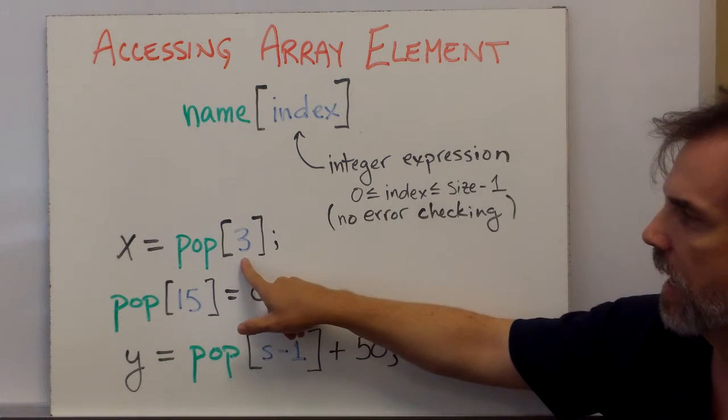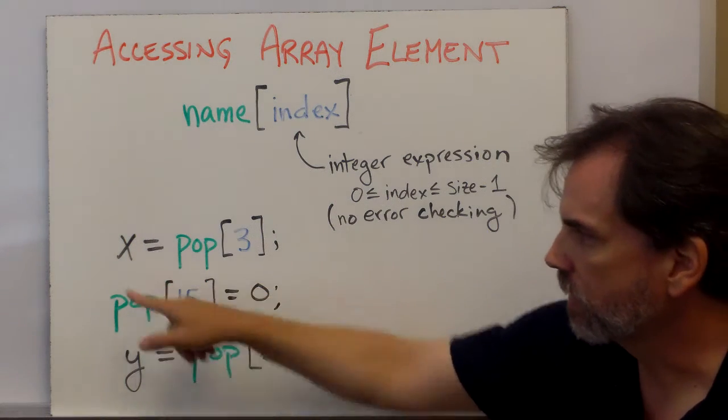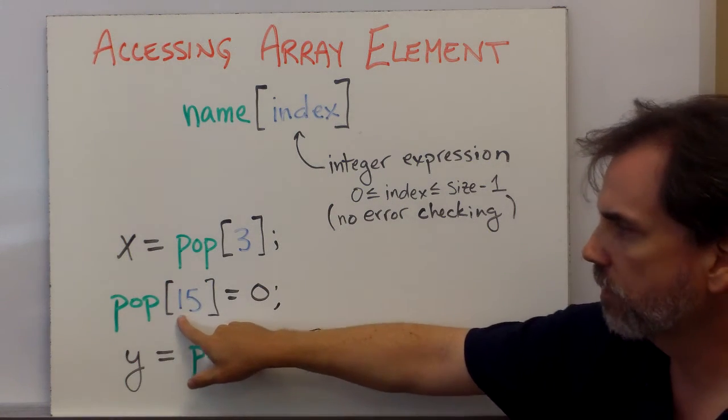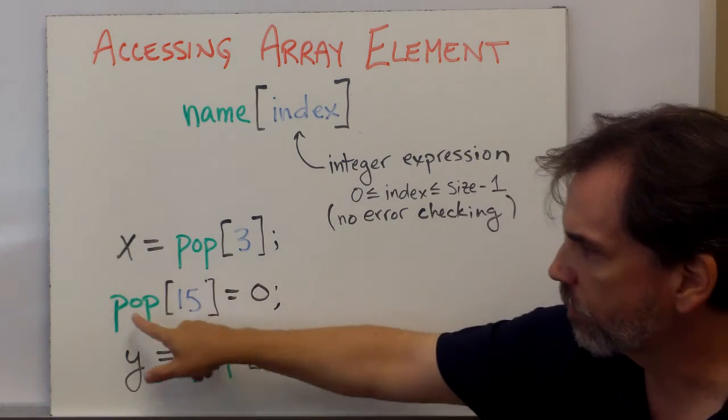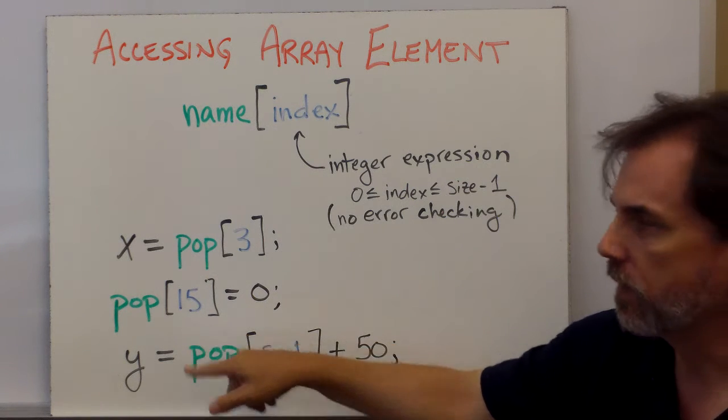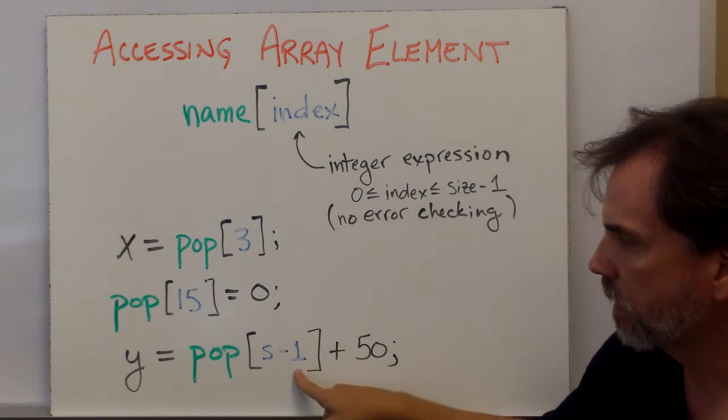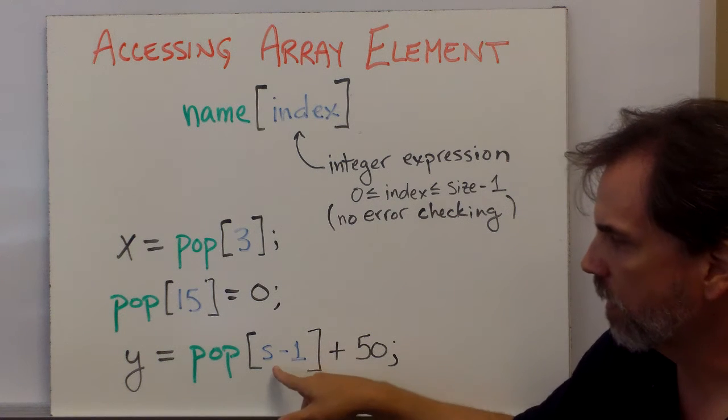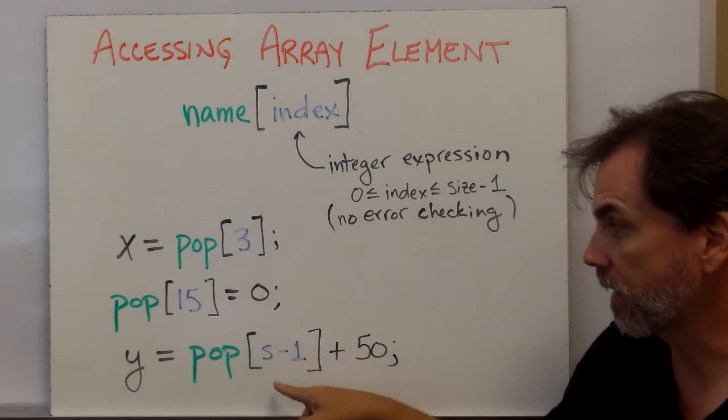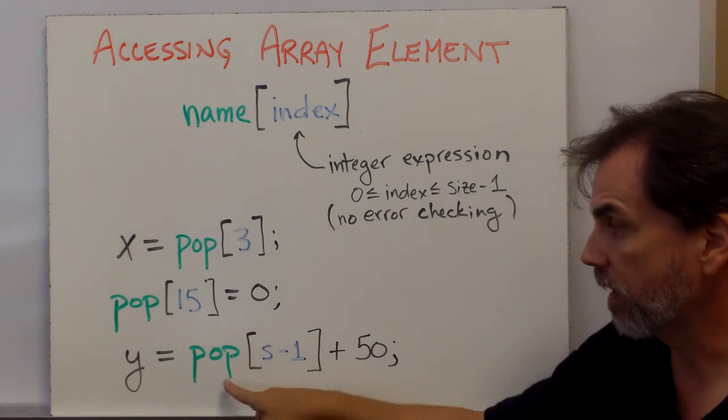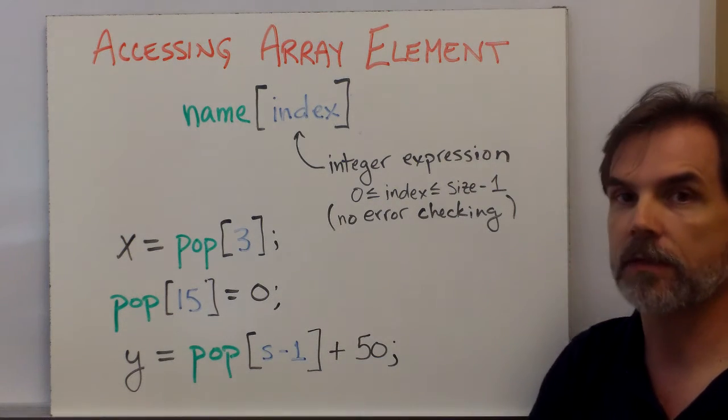So, for example, if I want to read element three of the pop array, this is how I do it, store it to x. If I want to change the value of element 15 of the pop array, I use this expression on the left-hand side of the assignment. And here's a case where the index is an integer expression. It's a variable. I don't know what s is at compile time, but at run time I can figure out which element I'm talking about, read it, add 50 to it, and store the result in y.